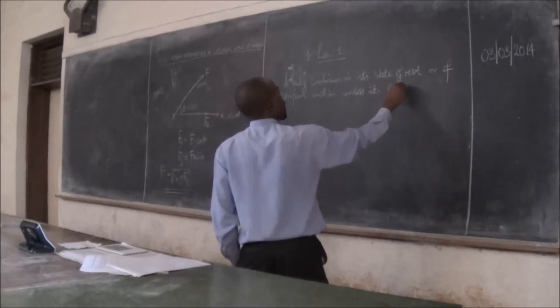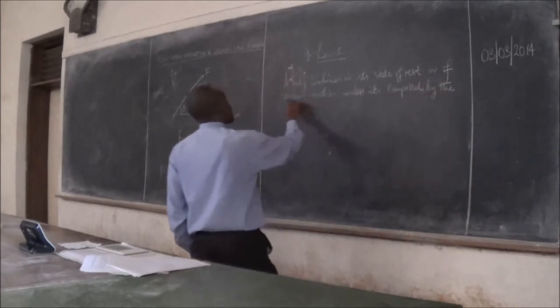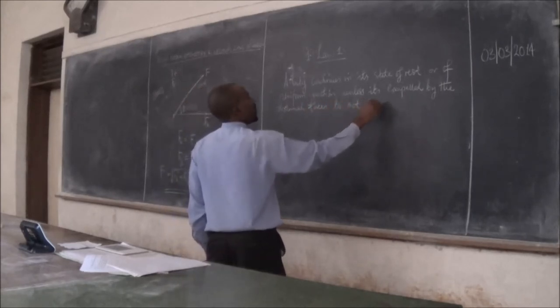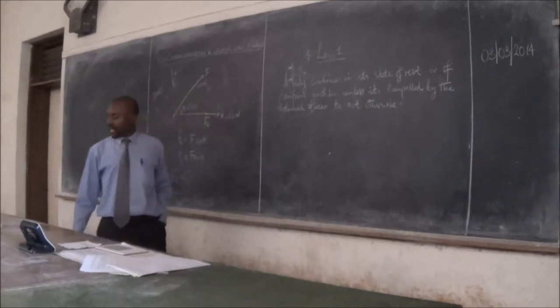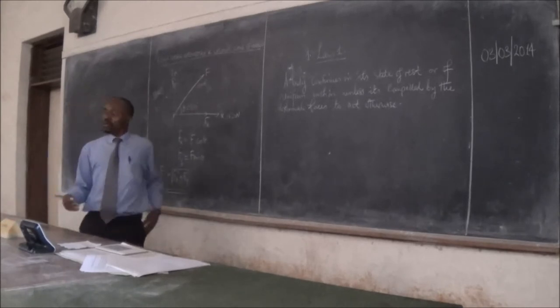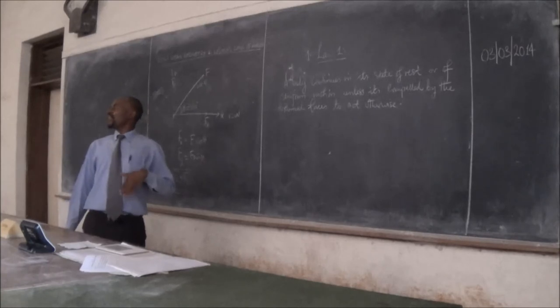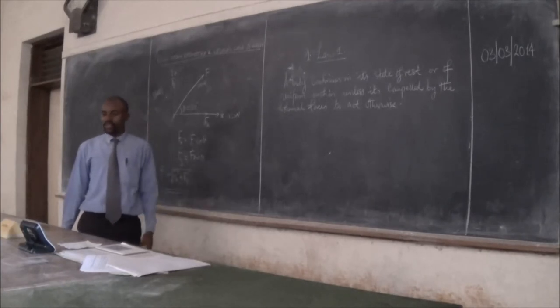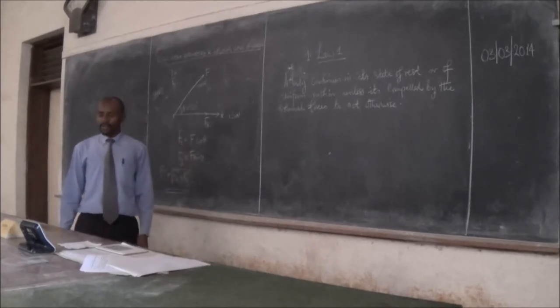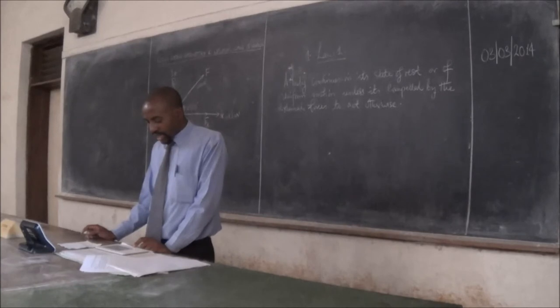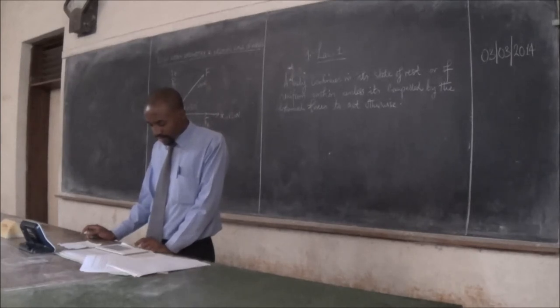So a body will use instead of rest or uniform motion unless it's compelled by the external forces to act otherwise. If it is at rest, external forces will be able to move it from rest. If it is moving, external forces will be able to stop it. So like if you have a car and you put it in neutral and it is sloping on the slope. Unless if you apply the brakes or handbrake, whatever you are using, it should roll downstream forever. And definitely it should do so when the forces are in equilibrium. That is when you have no resultant forces acting on it. And that should come inevitably.